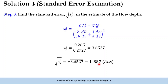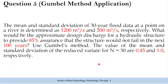Now let us solve the last problem in this series on Gumbel method application. The mean and standard deviation of 30-year flood data at a point on a river are 1200 cubic meters per second and 500 cubic meters per second respectively. What is the approximate design discharge for a hydraulic structure to provide 85 percent assurance that it will not fail in the next 100 years? Use Gumbel's method. The mean and standard deviation of the reduced variate for n equal to 30 are 0.45 and 1 respectively.